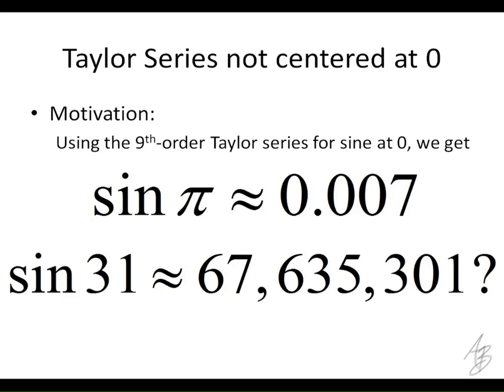If we try that same ninth order Taylor series for the sine of 31. Now, does anybody in here know what the sine of 31 is? The answer is no. There's nobody in the world that knows what the sine of 31 is. But what do you know about sine? The value of sine is always between negative one and one, right? So if we take the same Taylor series for sine at zero, going up to the ninth power, x to the ninth over nine factorial, and we plug 31 into that, you get 67,635,301 point something. It goes on forever. It's an irrational number.